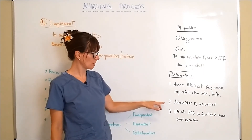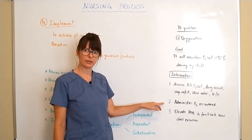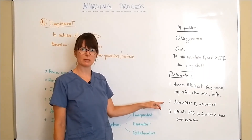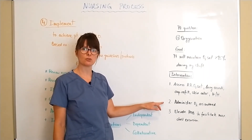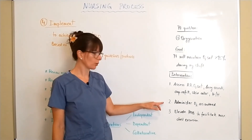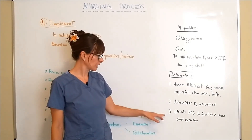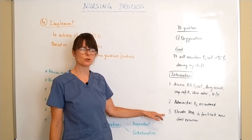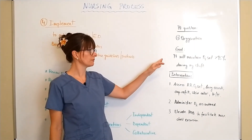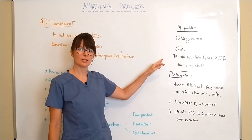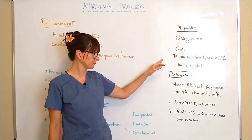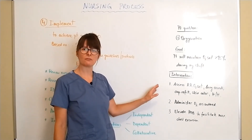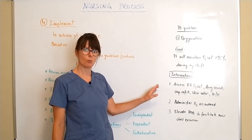Next, we can administer oxygen as ordered and titrate appropriately. This is a dependent nursing intervention because oxygen is considered a medication and always requires an order. A third intervention could be something as simple as elevating the head of the bed to facilitate maximum chest excursion and help the patient achieve the goal of O2 saturation greater than 95%.